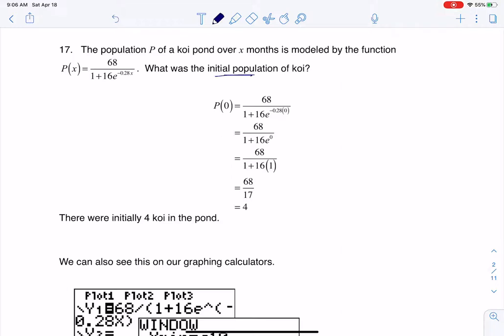So when they say initial population they mean when time is zero, or in this case because we're using the x variable we'll say when x is zero.